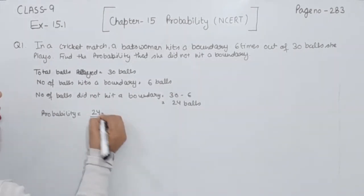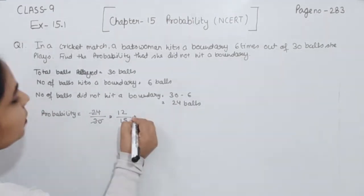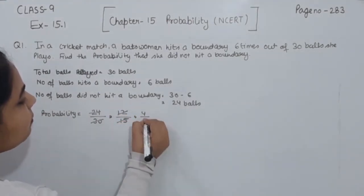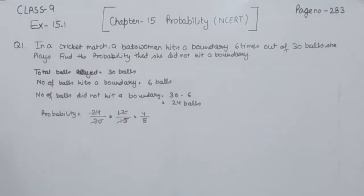Now, we are going to divide this one. 2 ones are 2, 2 twos are 4. 2 ones are 2, 2 fives are 10. Now, we can divide this one by 3. So, 3 fours are 12, 3 fives are 15. So, the probability we are having 4 by 5.